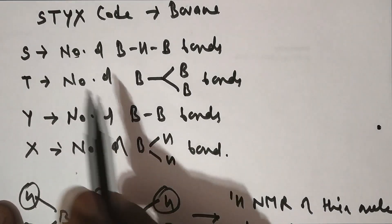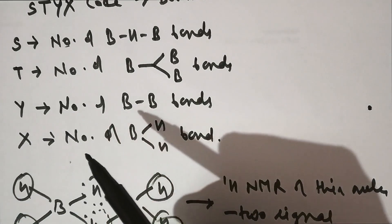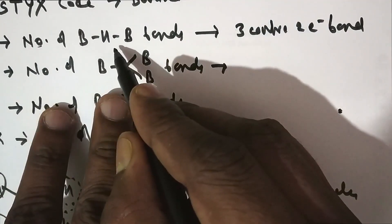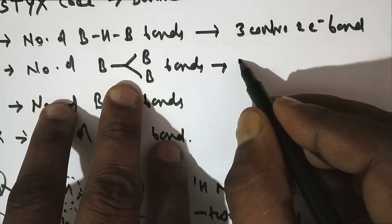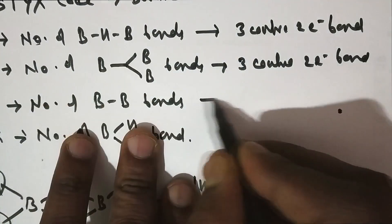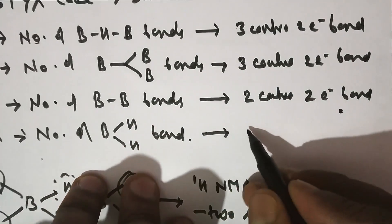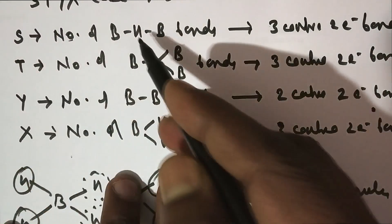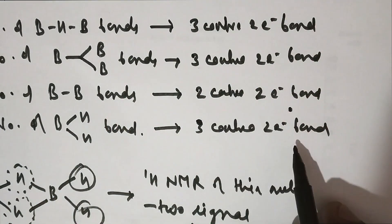Coming back to the STYX code, where STYX represents the different types of bonds present in B2H6: B–H–B bonds can also be named as 3-center 2-electron bonds. B–B–B bonds are also 3-center 2-electron bonds. B–B bonds are 2-center 2-electron bonds. And BH2 bonds are 3-center 2-electron bonds. So the STYX code generates the different bond types present in the borane molecule.